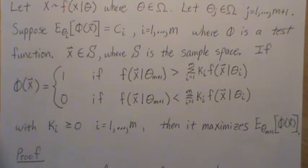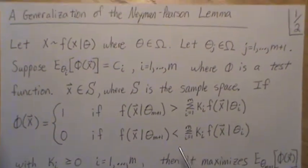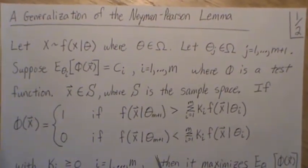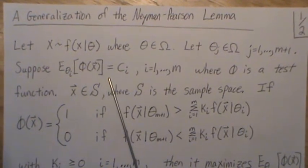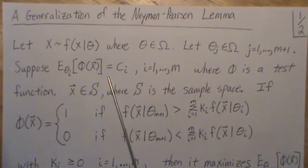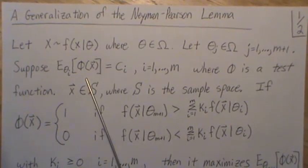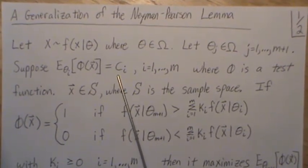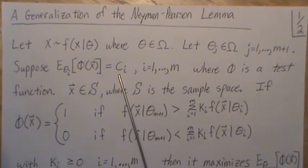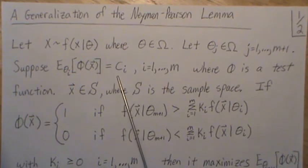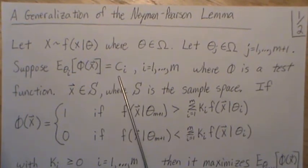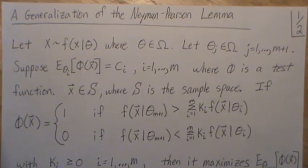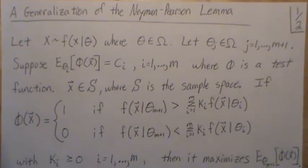What makes this an extension? In the Neyman-Pearson lemma, there's only one side condition: the expected value of the test function under the null hypothesis equals alpha, or some value. Here, there are m side conditions instead of just one. That's the generalization of the Neyman-Pearson lemma.